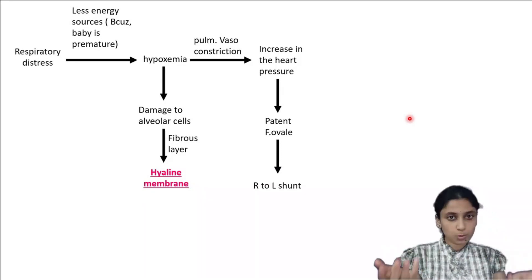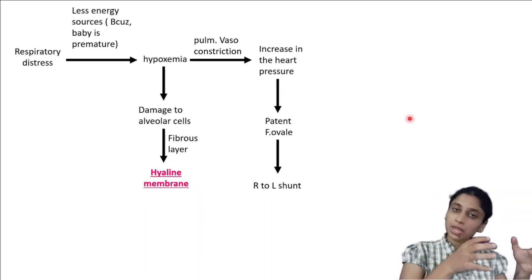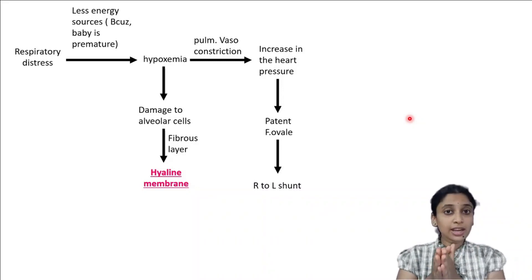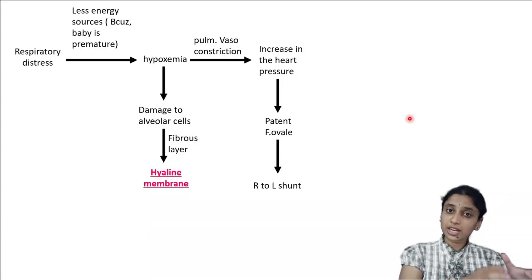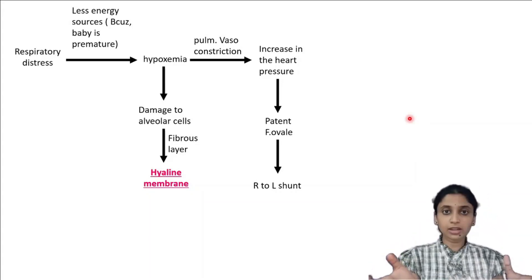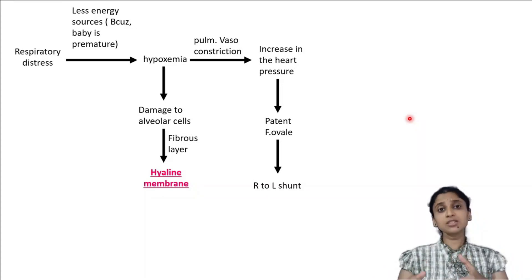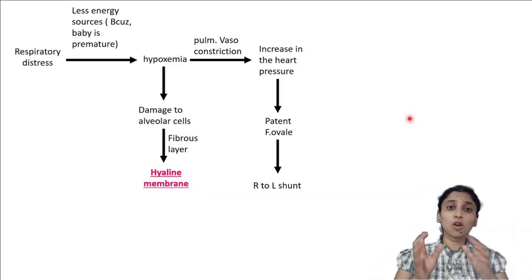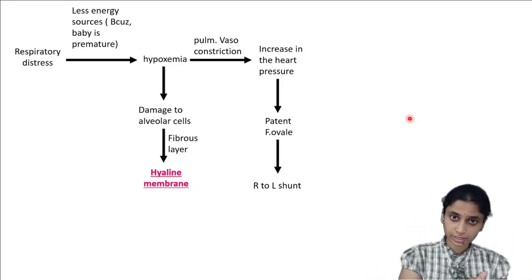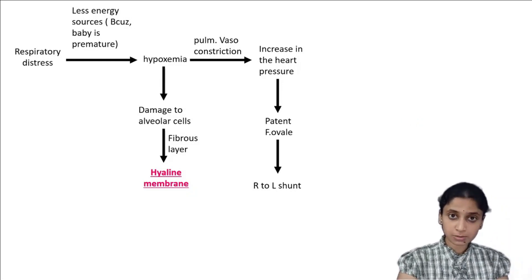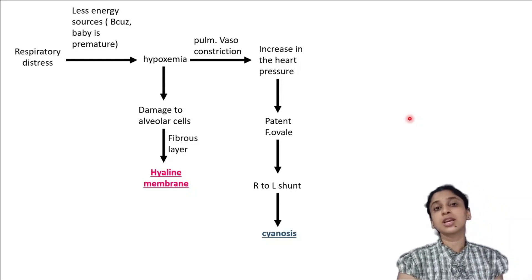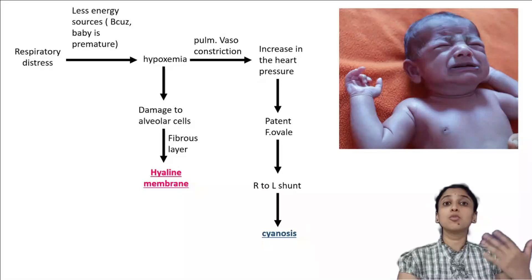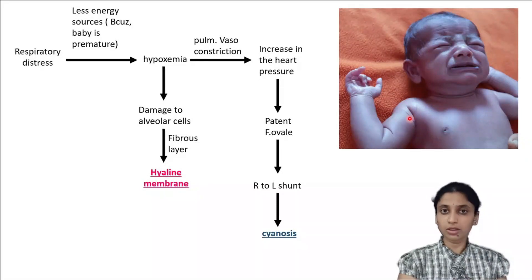There is a hole connecting the right heart and the left heart, or rather to be more specific, right atrium and left atrium. The right atrium comprises deoxygenated blood whereas the left atrium has oxygenated blood. There will be shunting from right to left. This causes mixing up of oxygenated as well as deoxygenated blood. Mixing up of these bloods causes cyanosis, the blueish discoloration of the body of the baby.